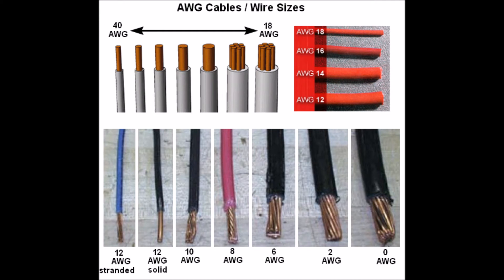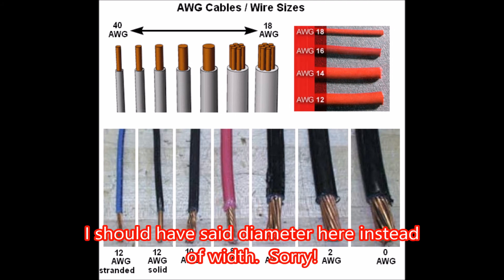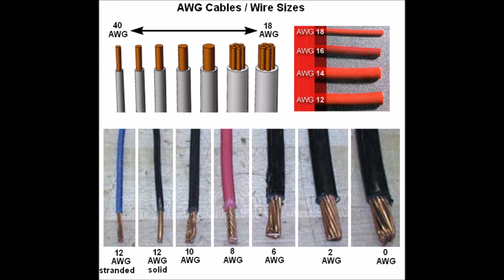So what does this mean for solar or for electricity in general? Basically it's going to have to do with the length and the width of your wire. When you're setting up your system you need to think about how thick the wire needs to be, and that's going to determine the resistance of the wire, which is going to determine how much current you can run through it safely.